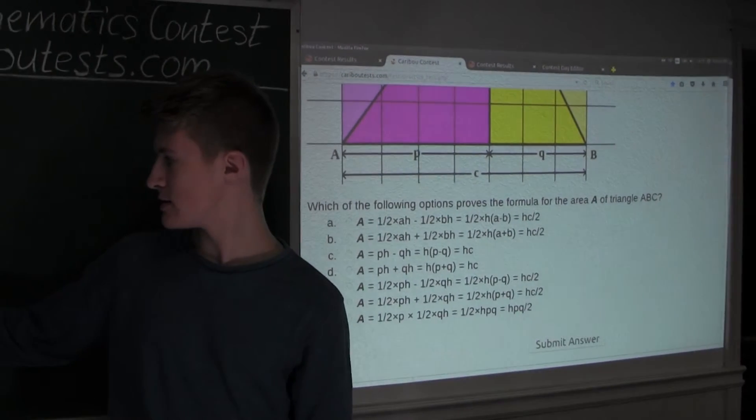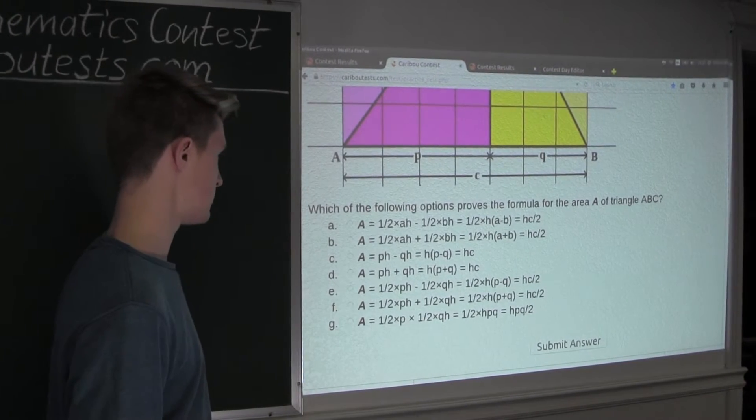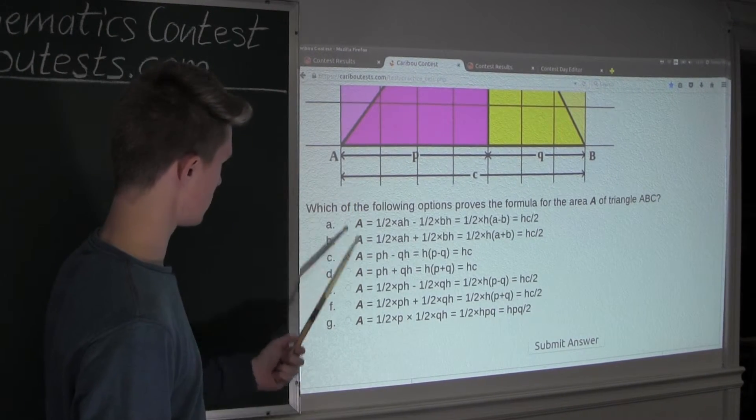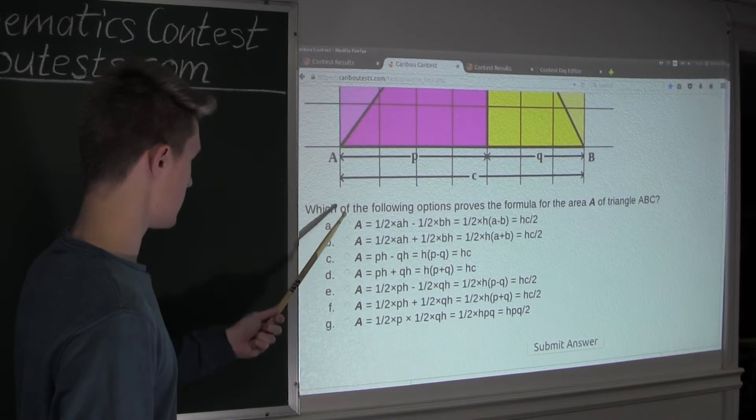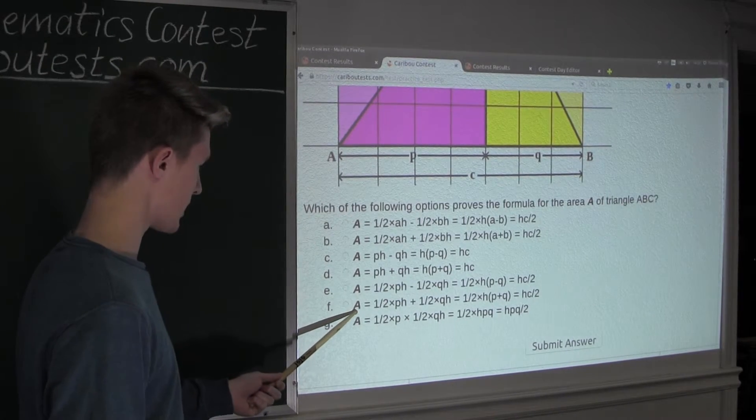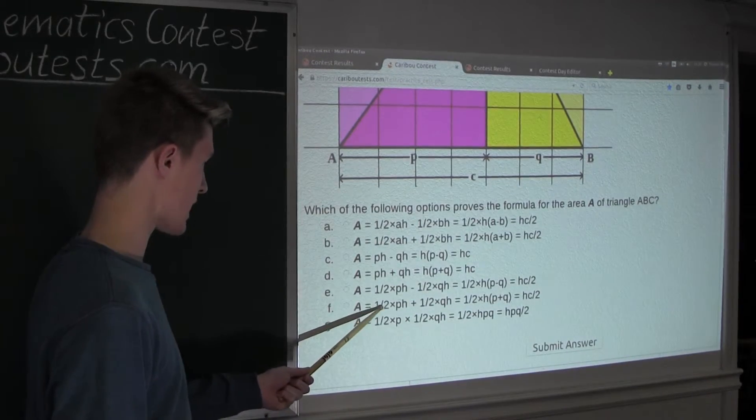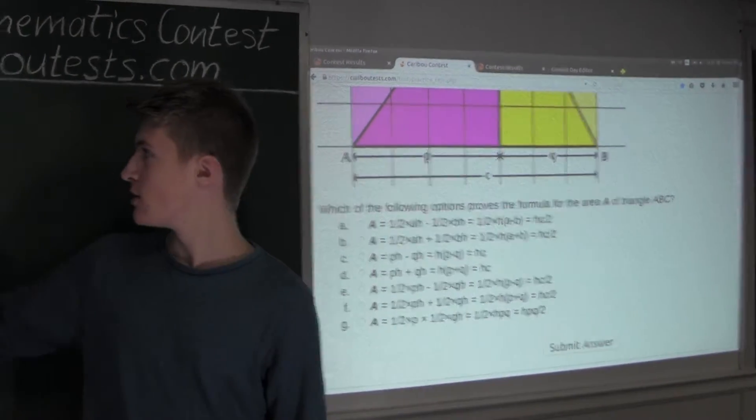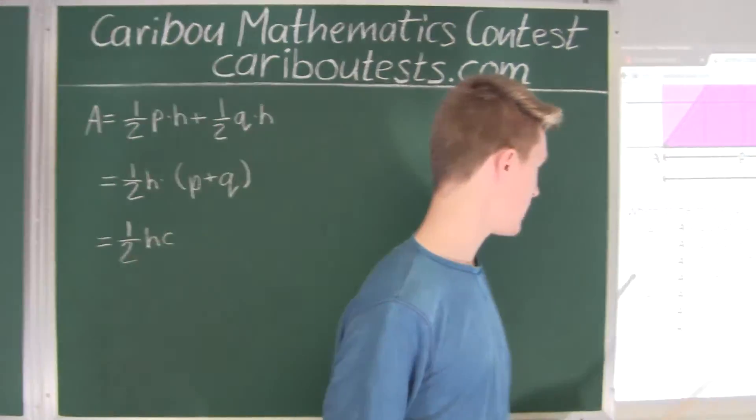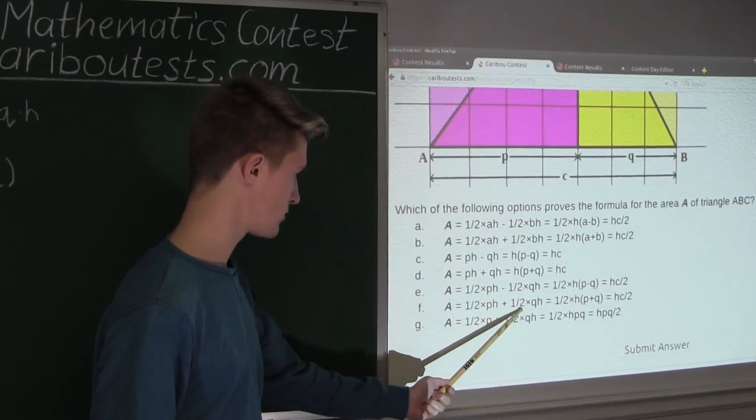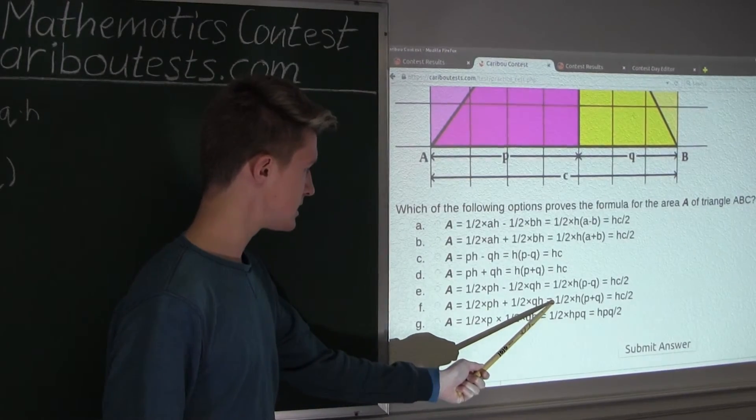So the area is equal to 1 over 2 times H times C. Now, if we were to look at all these options, we can see that option F must be correct because we have A is equal to half times P-H, which we have here, half P-H. And then we have plus 1 over 2 Q-H, which we have here, plus 1 over 2 Q-H. And that is equal to,